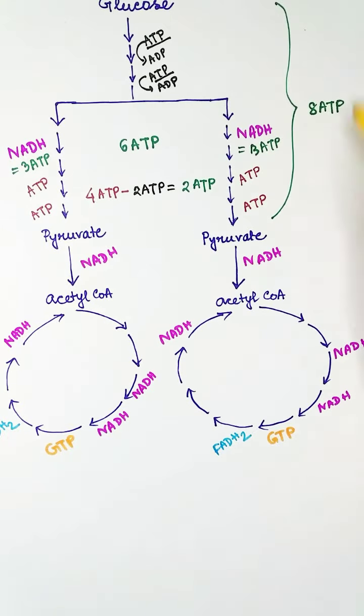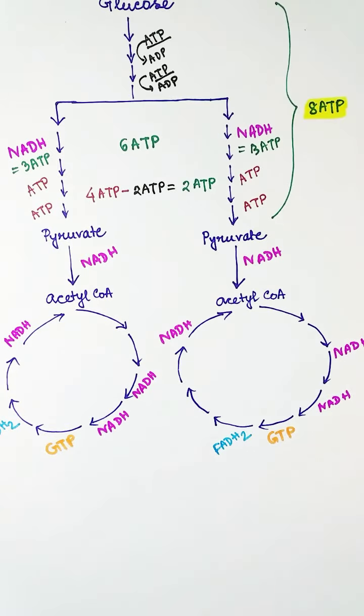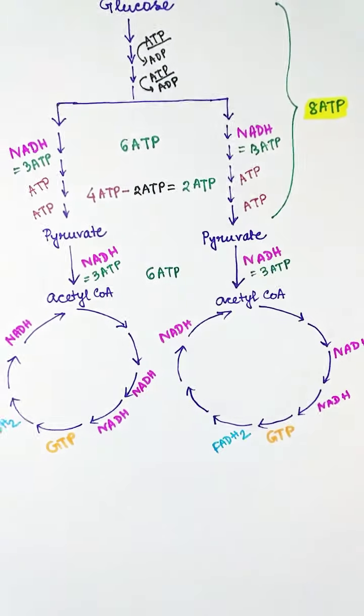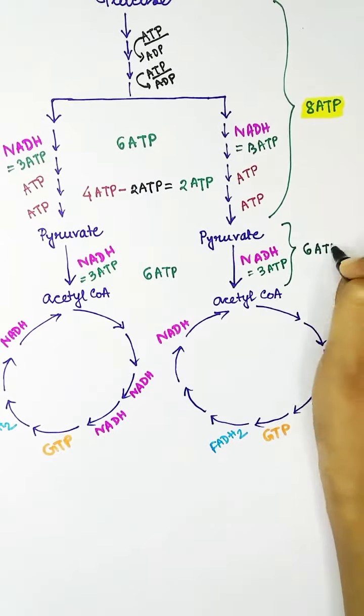Next, from pyruvate to acetyl-CoA, two NADH, so we get six ATPs from pyruvate to acetyl-CoA from one glucose molecule.